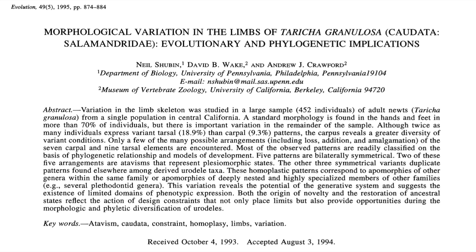Let's dive into an evo-devo paper from 1995 that doesn't discuss genes at all, but just looks at the bones. It's titled "Morphological Variation in the Limbs of Taricha granulosa: Evolutionary and Phylogenetic Implications." It's by Neal Shubin, David Wake, and Andrew Crawford — this is before Shubin became a famous celebrity scientist with the discovery of Tiktaalik. One of the things it shows is that Shubin really put the work in. When you read through it, you learn exactly how important background work is in science. He was prepared for Tiktaalik because he had a deep knowledge of anatomy and amphibian relationships.